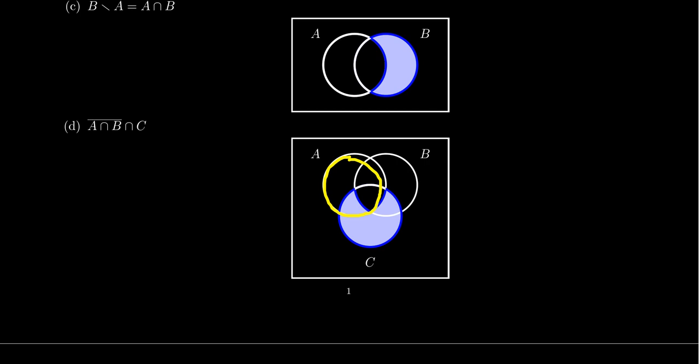And so notice that if we want to illustrate the set, the complement of A intersect B intersect with C. So notice this is not the same thing as A complement intersect B complement intersect C. There is an important thing there. We're taking the complement of A intersect B, which on our illustration here, A intersect B would be this thing right here.